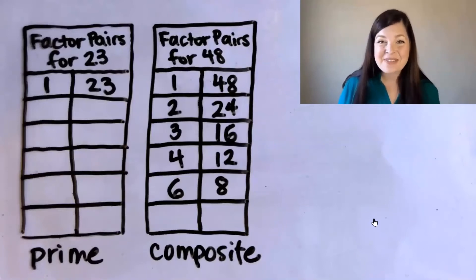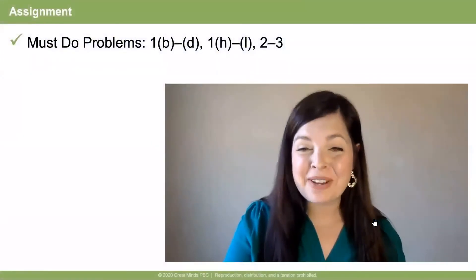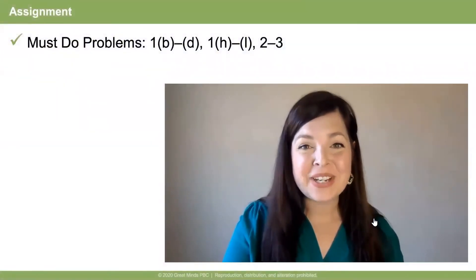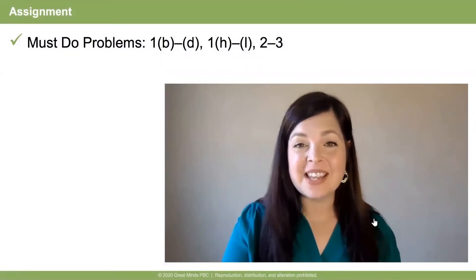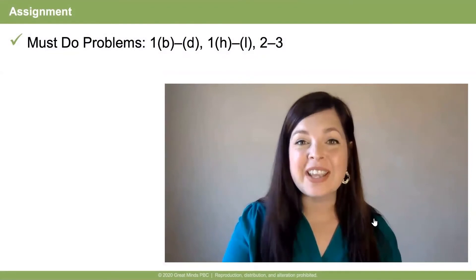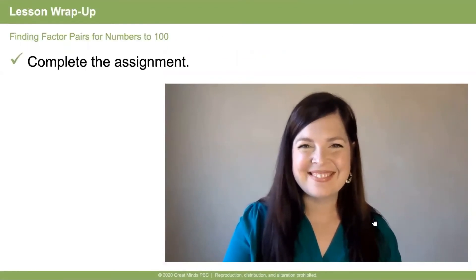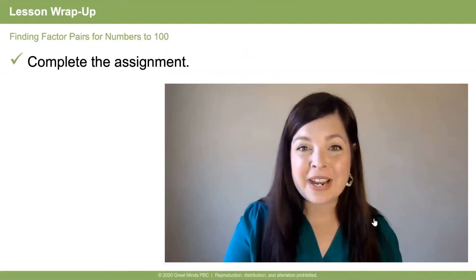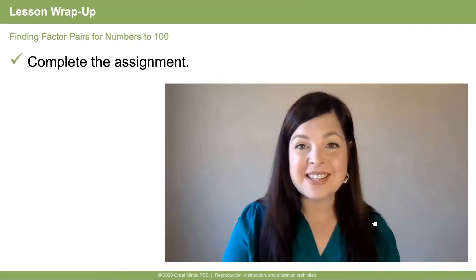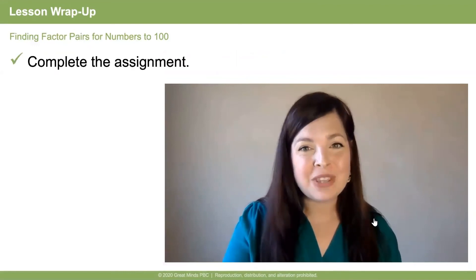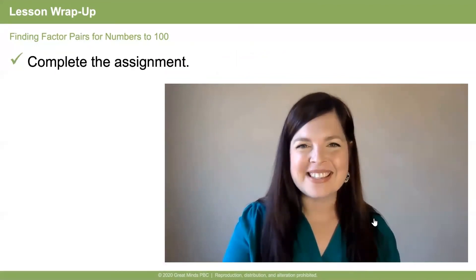Excellent work today, friends! I think we're ready for the problem set. On the screen are the must-do problems. Work on these problems for 10 minutes, and if you finish early, feel free to try any of the other problems. Today we found factor pairs for numbers to 100 and learned about prime and composite numbers. Be sure to check in with your teacher, and I'll see you next time for another Eureka Math lesson. Bye!